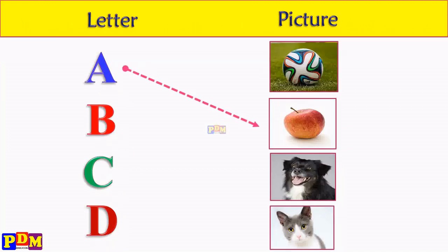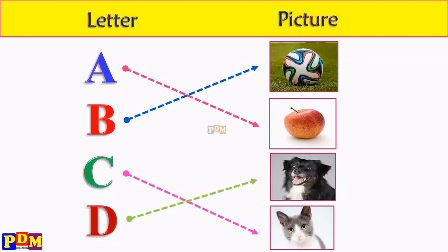A for apple. B for born. C for cat. D for dog.